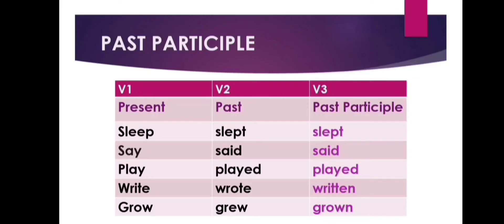In the given table, third form of verb: slept, said, played, written, and grown are known as past participle.